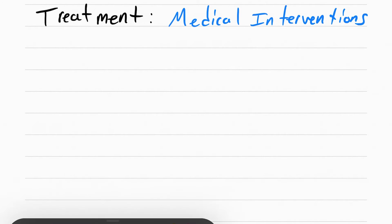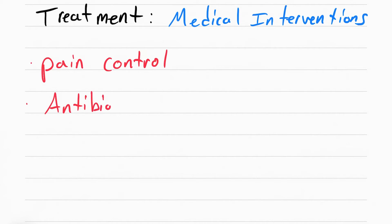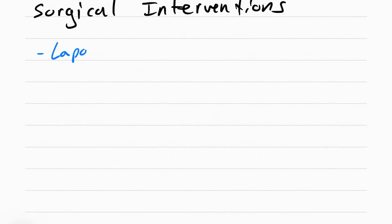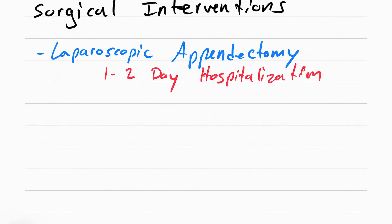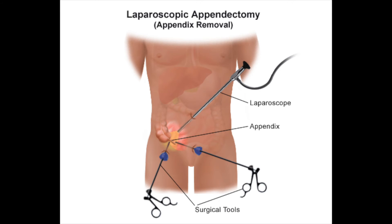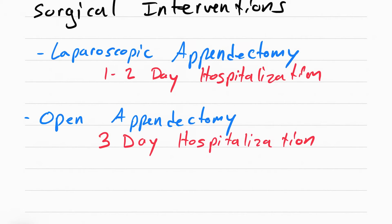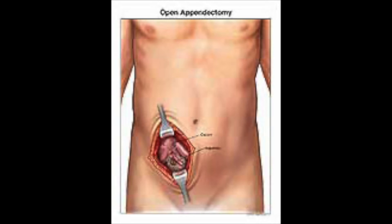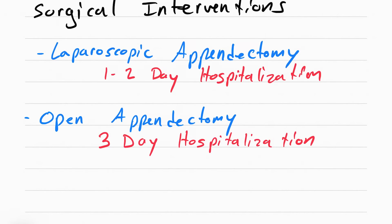The medical intervention for appendicitis includes pain control and antibiotics. The real treatment is a surgical intervention called an appendectomy, which can be done two ways: a laparoscopic approach or an open appendectomy. Laparoscopic appendectomies involve tiny incisions on the abdomen with tools inserted to remove the appendix — only about one to two days of hospitalization. An open appendectomy is more invasive and takes around three days. Overall, laparoscopic procedures are a lot safer and more clinically beneficial for the patient.